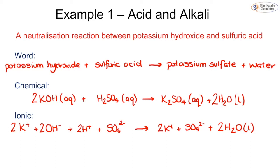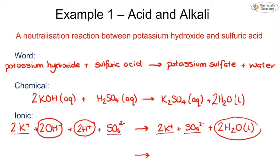Looking at both sides of the equation, the potassium ions and sulfate ions are identical on both sides — those are our spectator ions. We remove them and write what is left over. Our ionic equation is therefore: 2OH− + 2H+ → 2H2O.